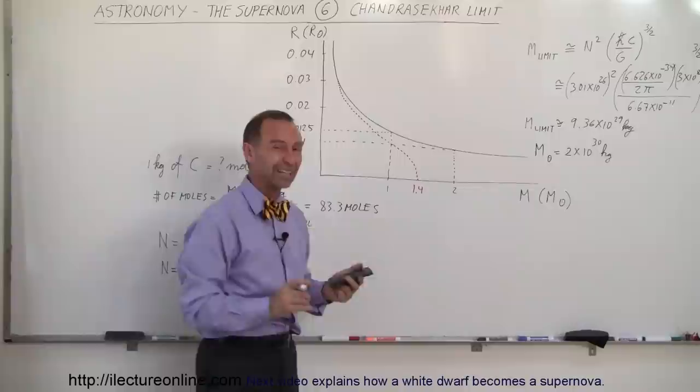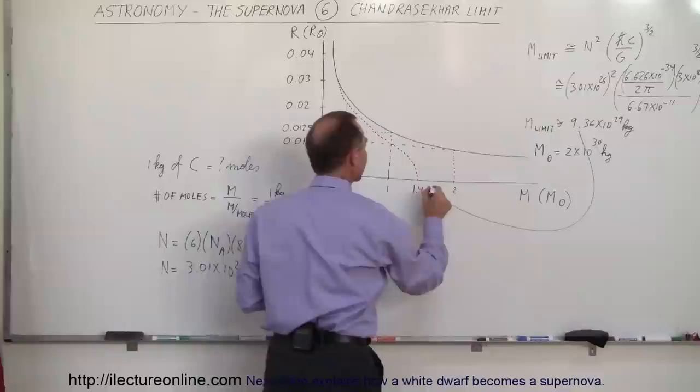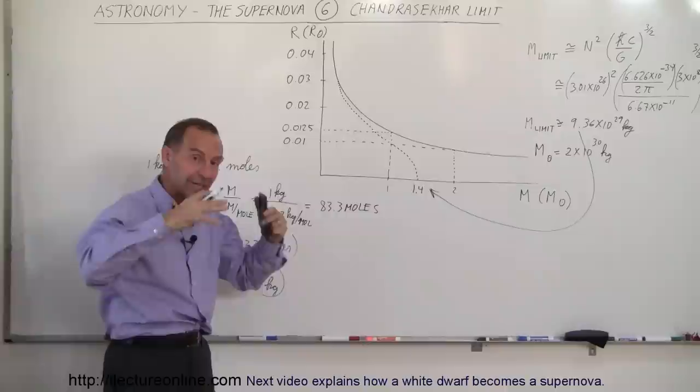But eventually with additional calculations, they finally zoomed in and found out that the limiting mass at which a white dwarf could no longer withstand the external pressures of gravity collapsing in the star happened at 1.4 times the mass of the sun.